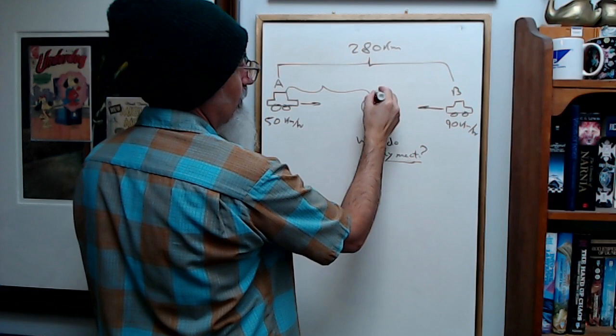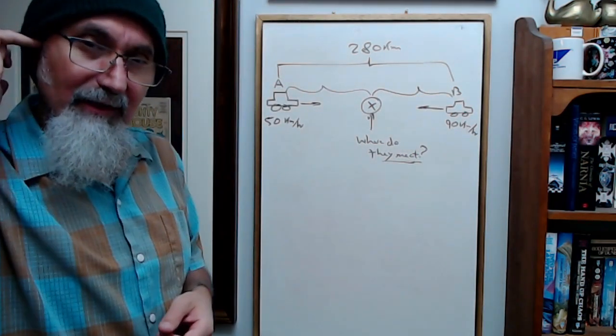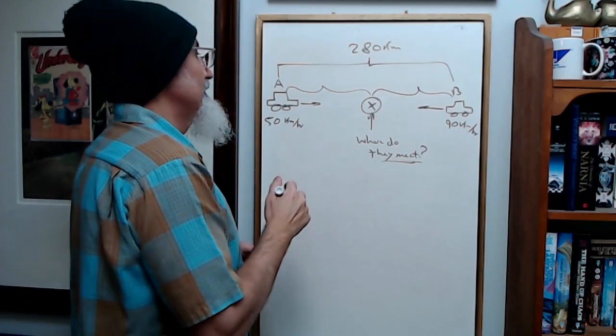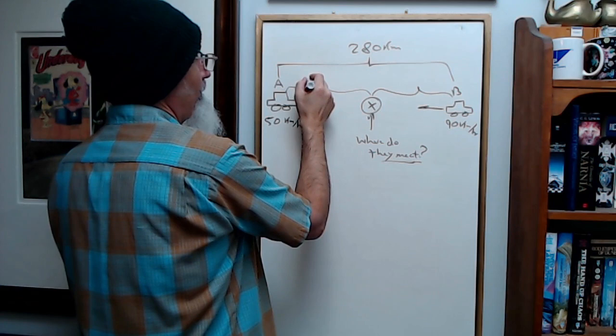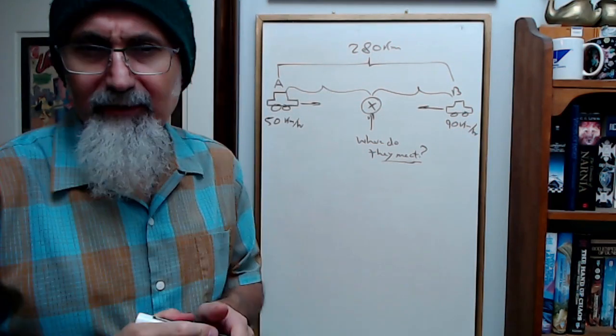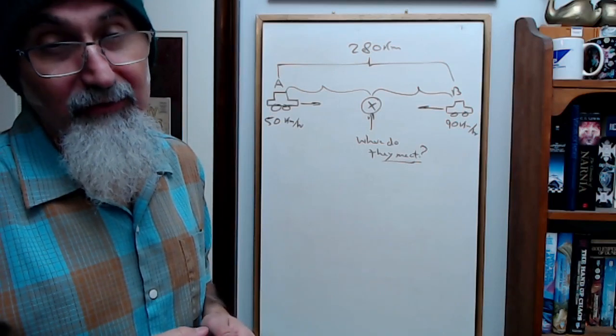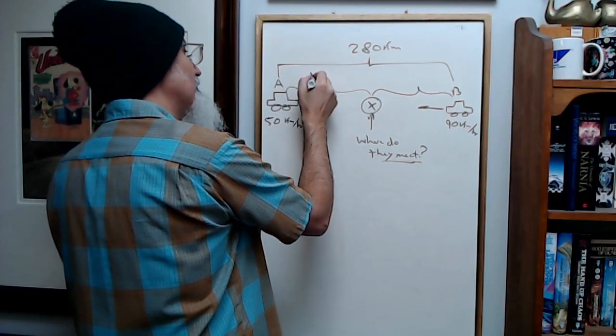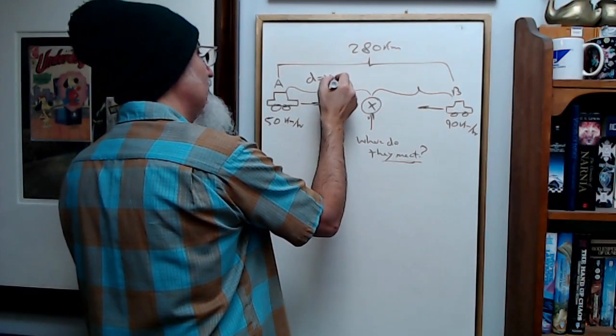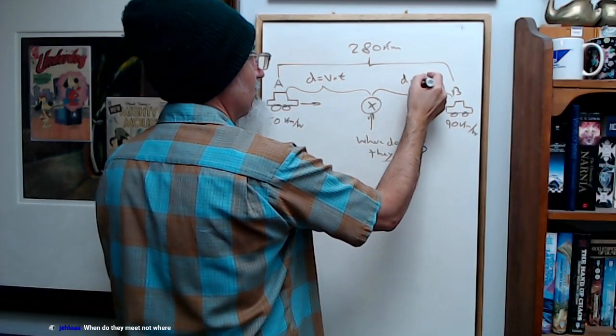We need formulas for this. We need our kinematics formulas. The distance... how should we do this? Let me think about this for a second. Should we do a distance-time? Distance equals velocity times time. Let's do this. Start off with basic equation: distance is equal to velocity times time. Over here too, distance is equal to velocity times time.